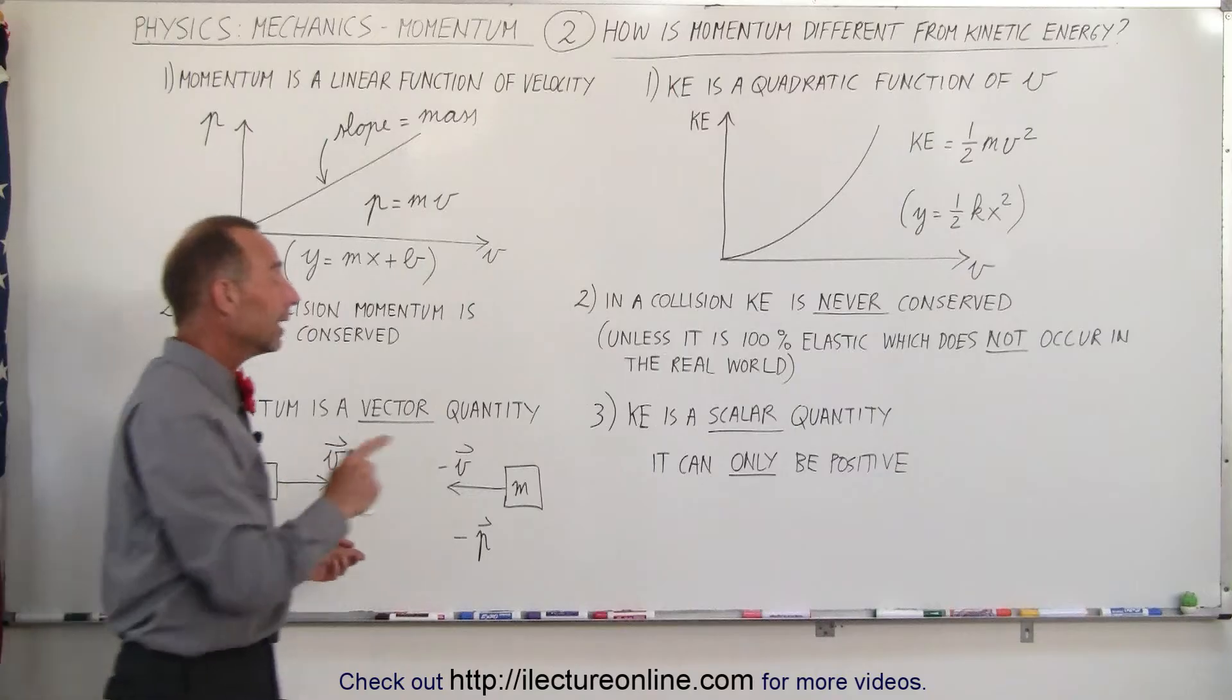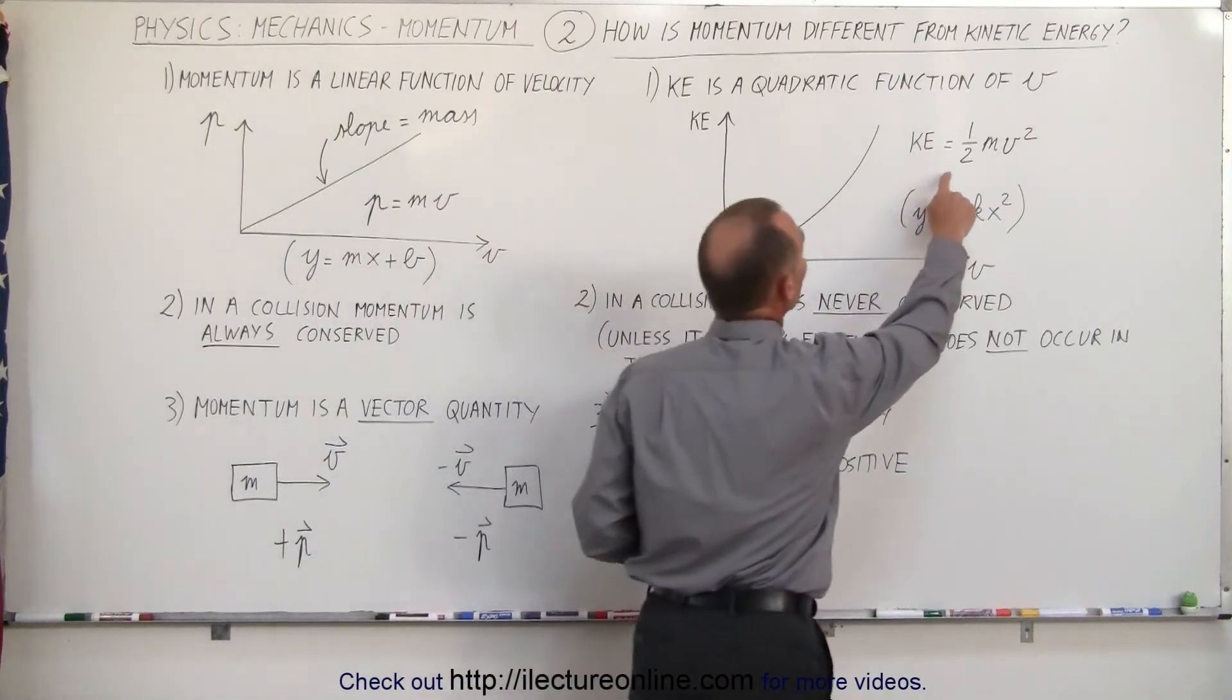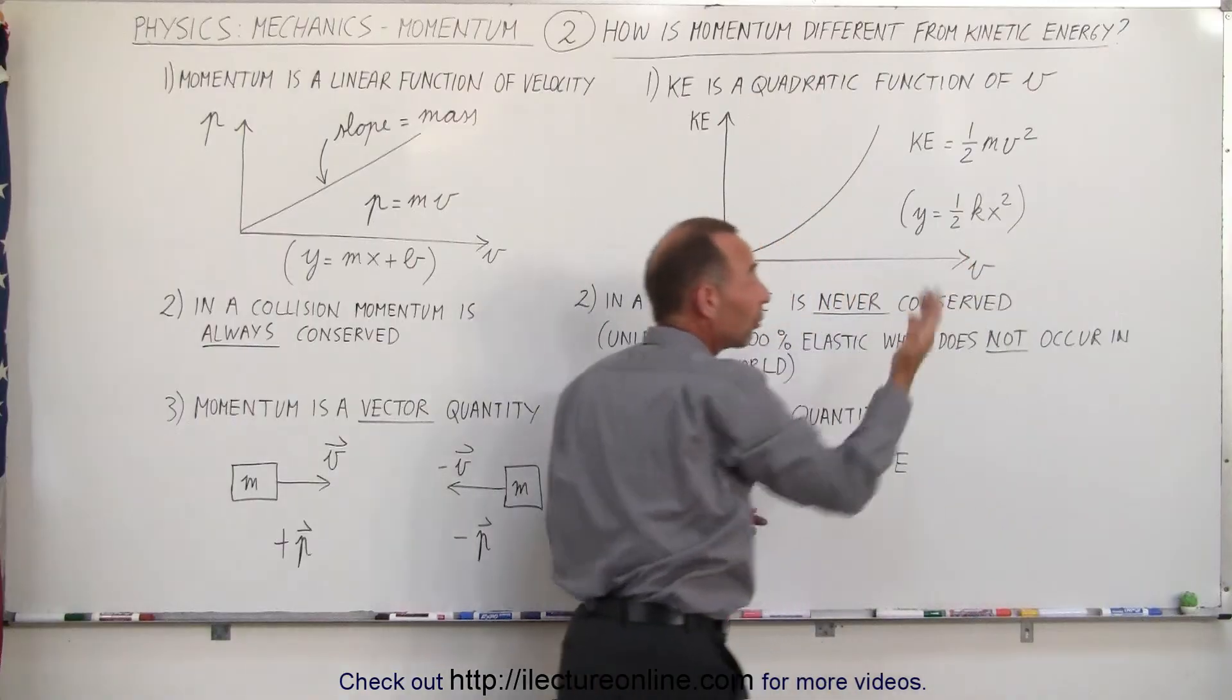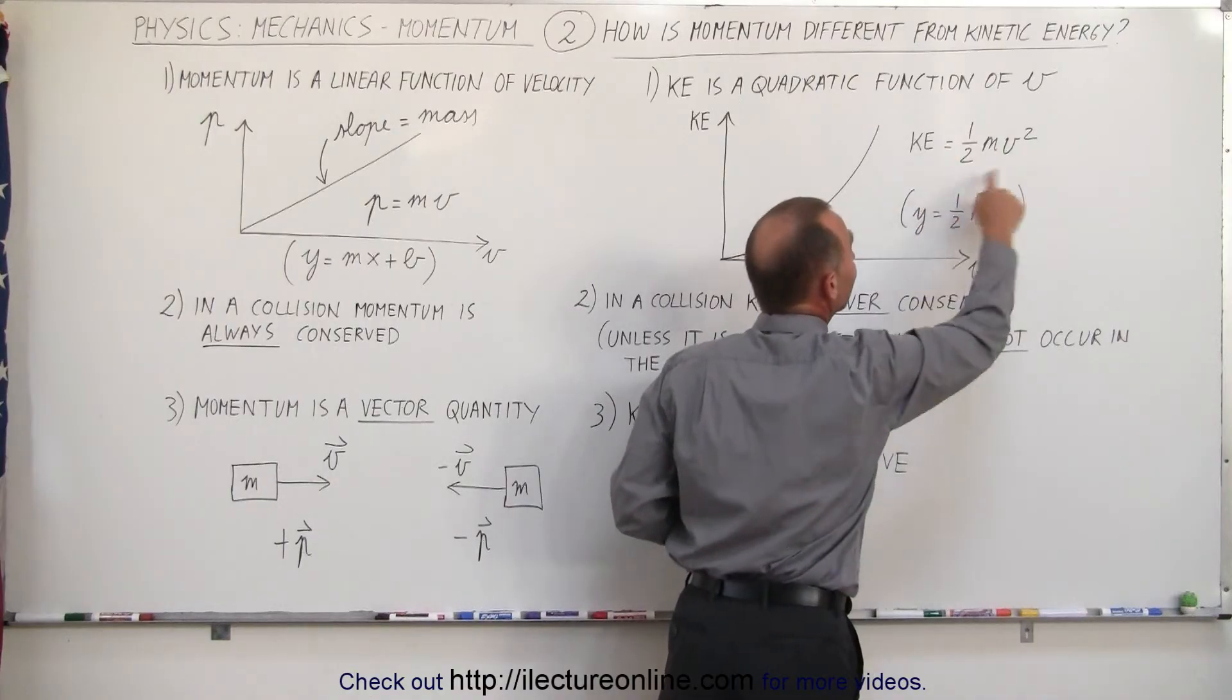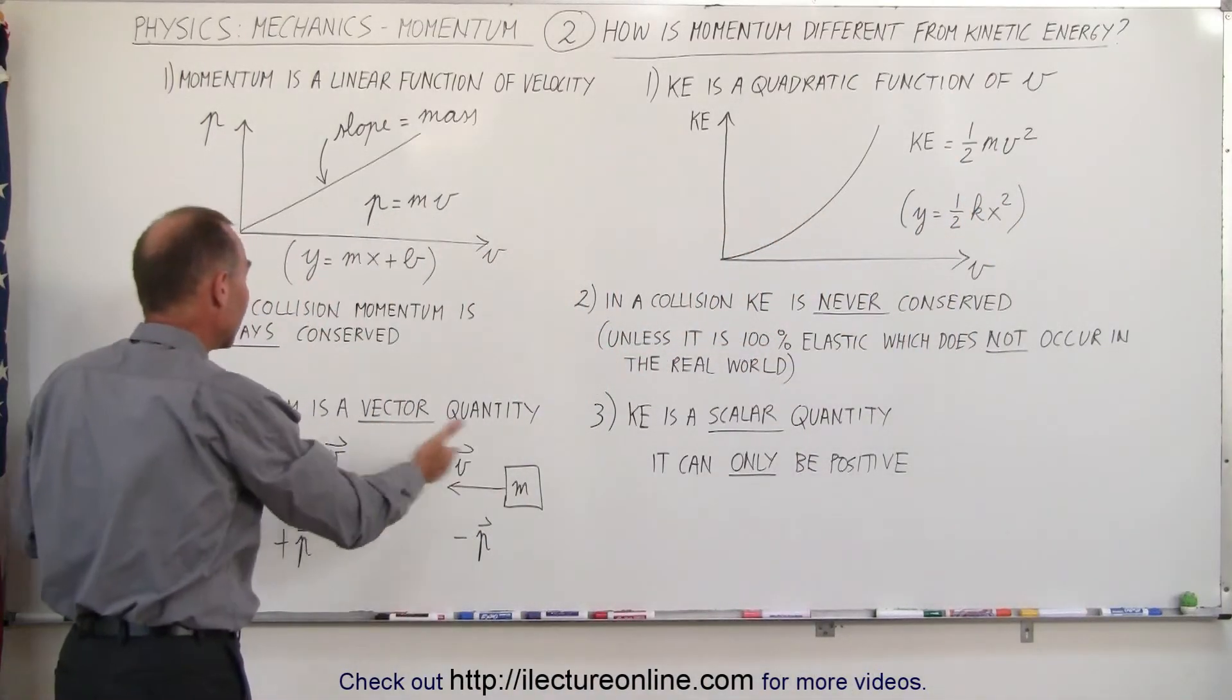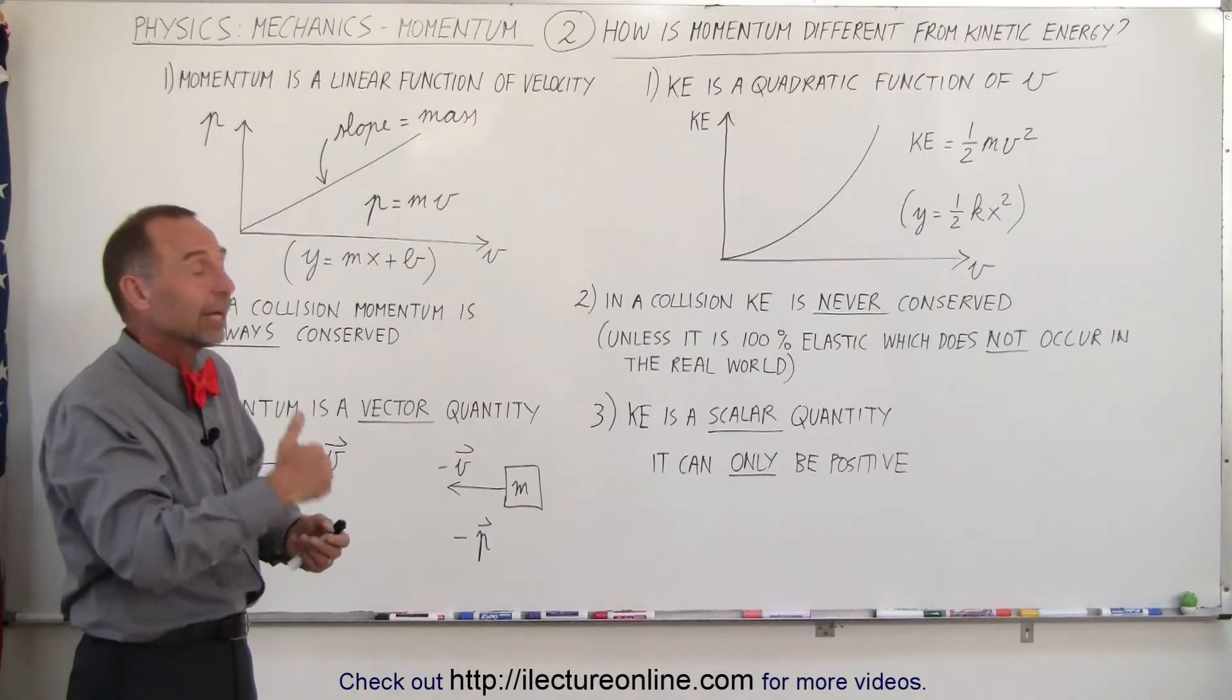On the other hand, kinetic energy is a scalar quantity. And since kinetic energy is equal to one-half mv squared, since the velocity is squared, a squared velocity can never be negative, because it's squared, and of course the mass can never be negative. In other words, kinetic energy can never be negative. That's not the case with momentum, because since it's a vector quantity, it can be moving in a positive or negative direction, and therefore it can have positive or negative momentum.